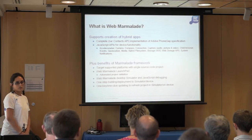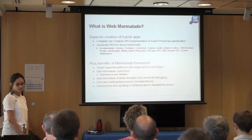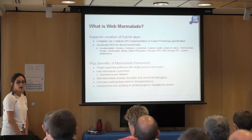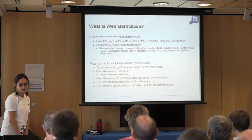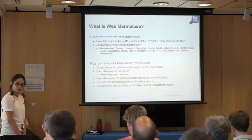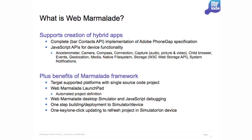You also get the benefit of the Marmalade framework. Not only do you get to target supported platforms with a single code base, you have various tools such as the Marmalade Launchpad which automates your project definition — no need to mess around with configuration files such as the info.plist for iOS or manifest files for Android. You also get the Web Marmalade desktop simulator, integrated debugger for JavaScript, and very easy one-step building and deployment to devices, plus one-click updating to refresh your project in the simulator or redeploy to device after making changes.